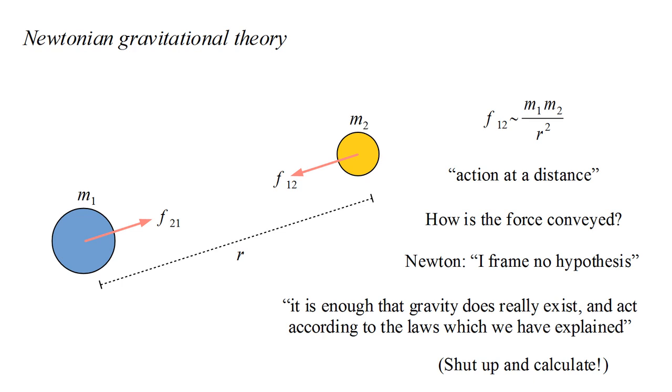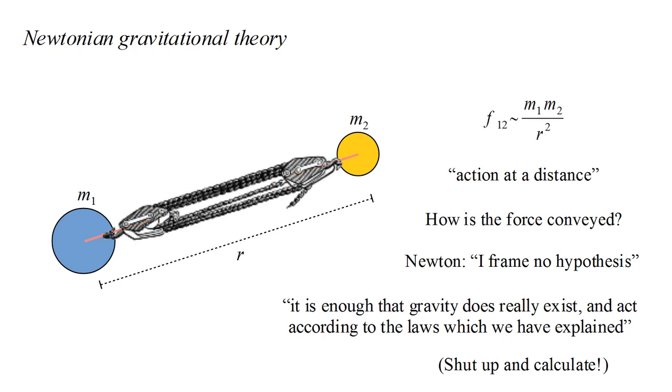Now, maybe it's because our bodies primarily interact with the world through mechanical means, but we tend to want a mechanistic explanation of phenomena. We want to see the ropes and pulleys responsible for making things behave the way they do. Let's look at one mechanical explanation for gravity that was put forward shortly after Newton published his theory.